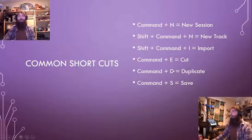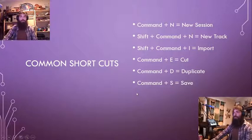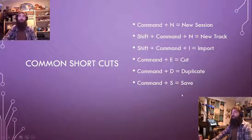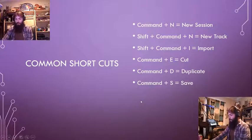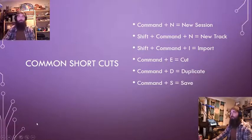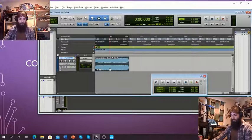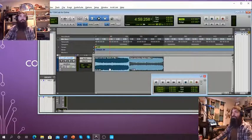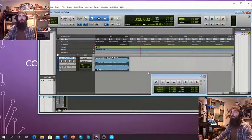Another fun one is Duplicate — Command D. This allows you to quickly make a duplication. Let's say you've got a drum loop that sounds really good and you want to loop it — just highlight it, Command D. That's pretty simple. I'll just show an example: if I wanted to duplicate this song, Command D — boom, two songs. And of course, Command Z to undo.